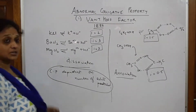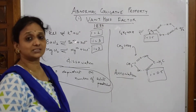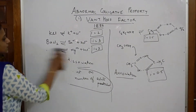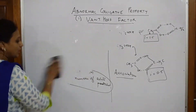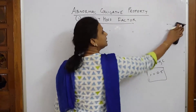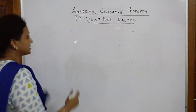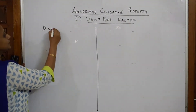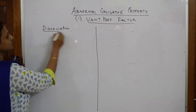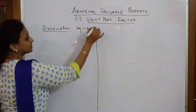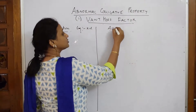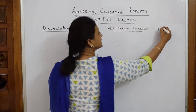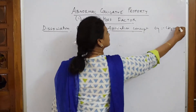Now I have to calculate what this I is and what alpha is. Let us calculate Van't Hoff's factor. I will divide the board into two halves: the first for dissociation — taking KCl as example — and the second for association — taking acetic acid or benzoic acid, wherever hydrogen bonding is formed.